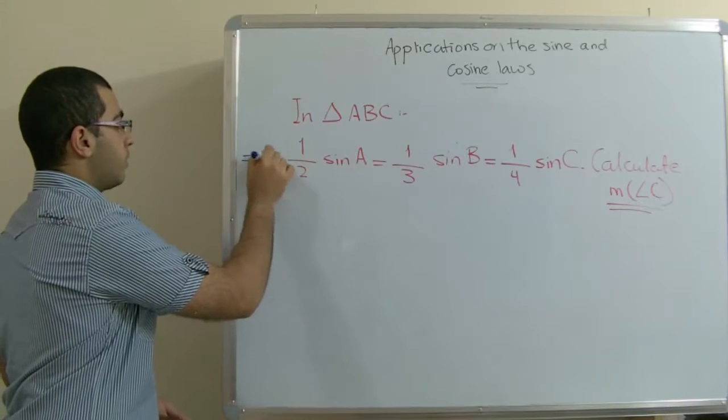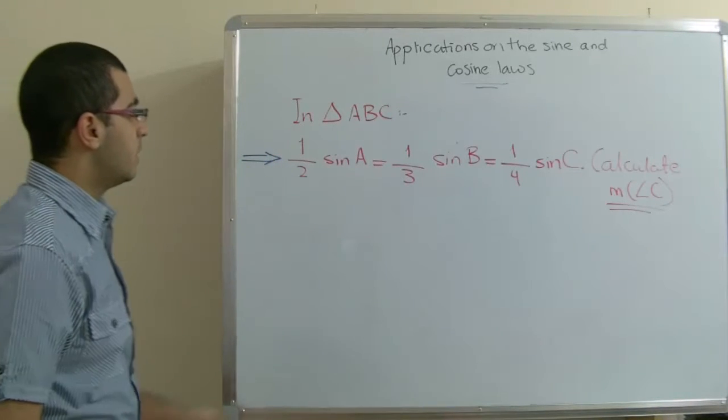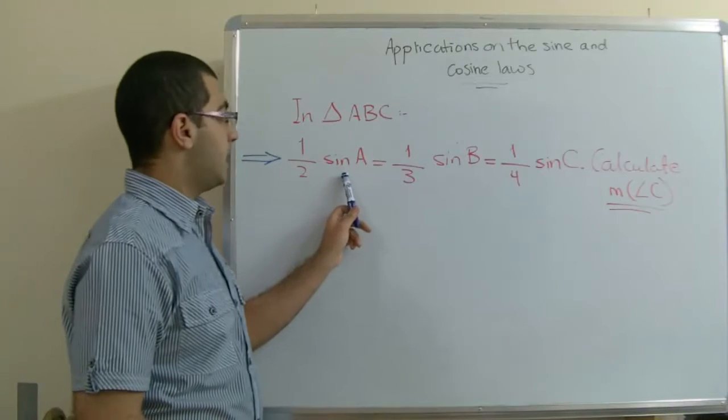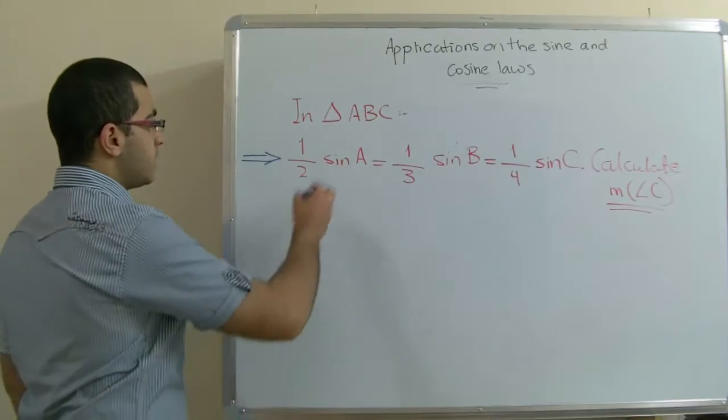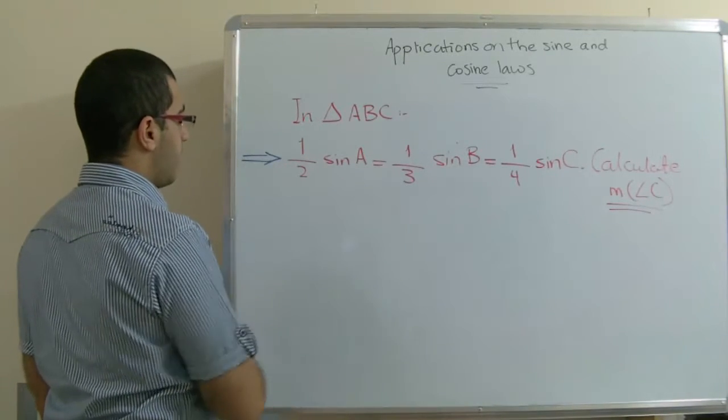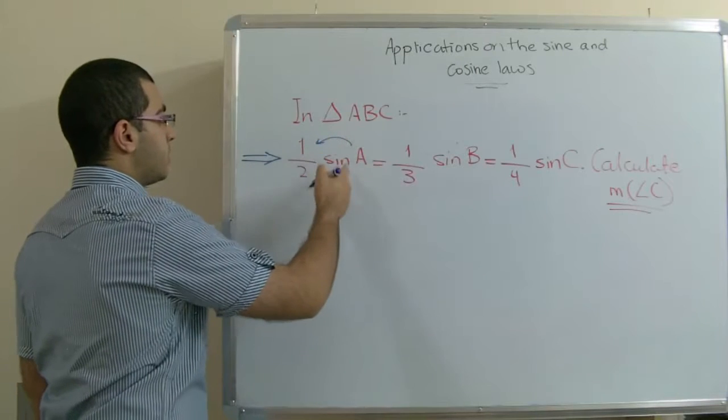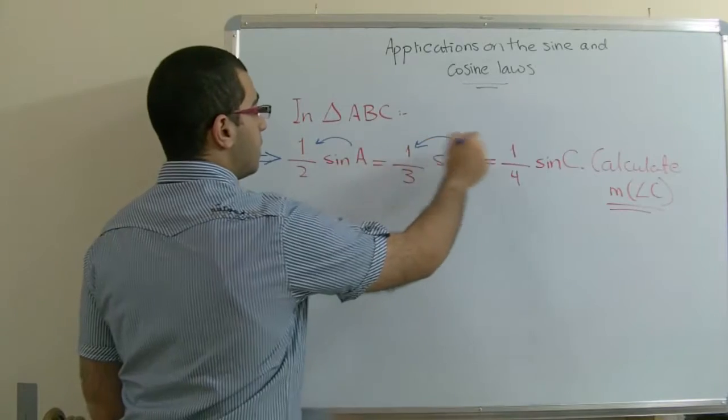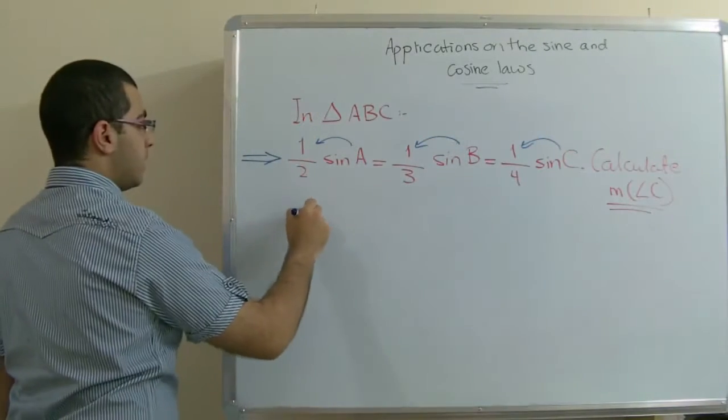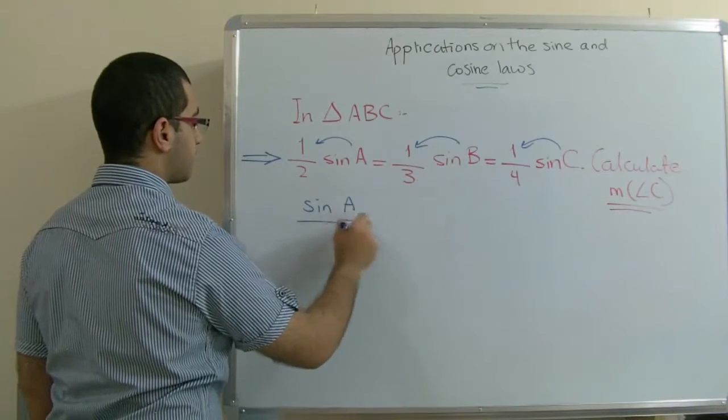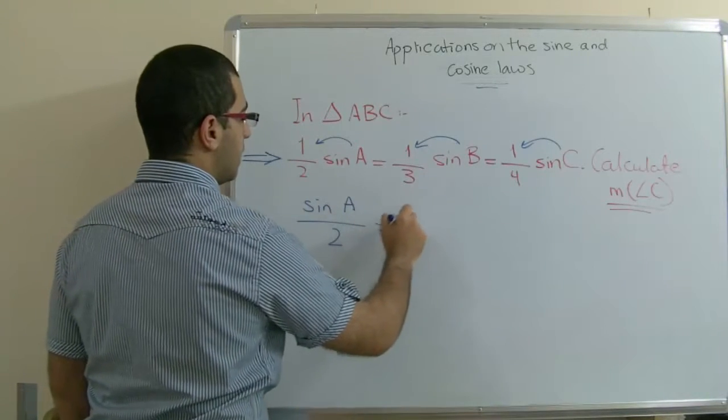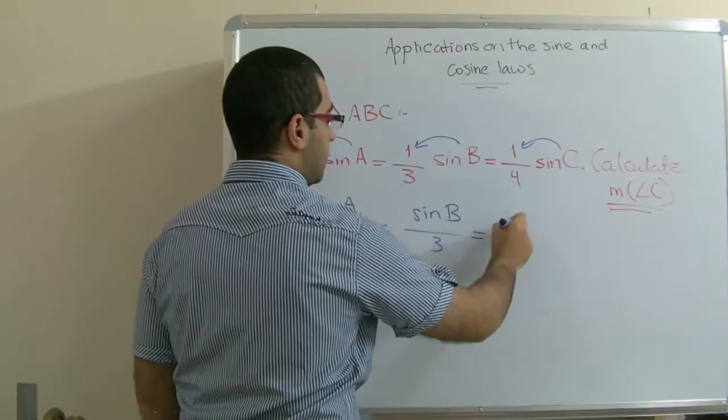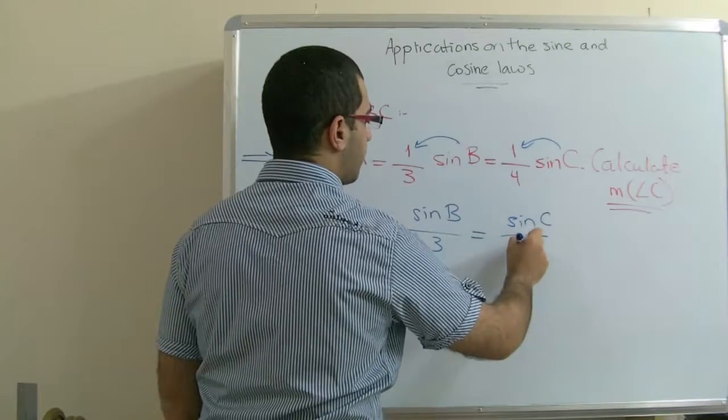So we are going to work with this given here and it seems that we are going to use the sine law. So this can be written in the form of a ratio. So it can be written like this: sine A over 2 equals sine B over 3 equals sine C over 4.